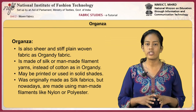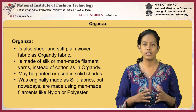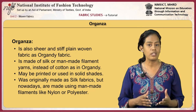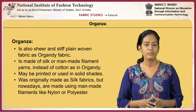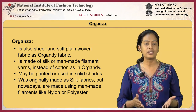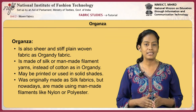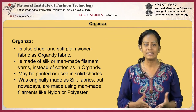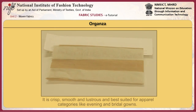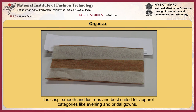Organza is also a sheer and stiff plain woven fabric like organdy, but made of silk or man-made filament yarns instead of cotton. They may be printed or used in solid shapes. Originally made of silk, they are now made using man-made filaments like nylon or polyester. Organza is crisp, smooth and lustrous, best suited for apparel like evening and bridal gowns. Viscose and acetate organza are used for making decorative curtains.